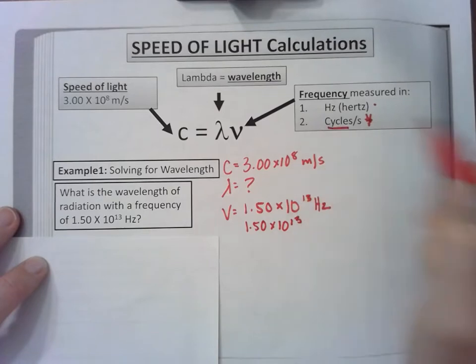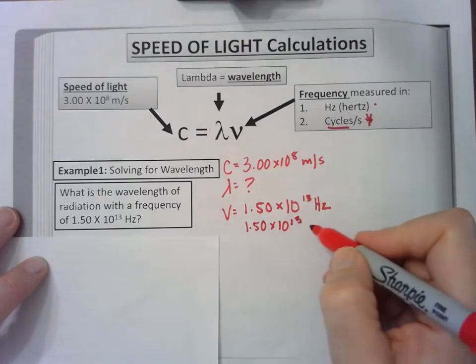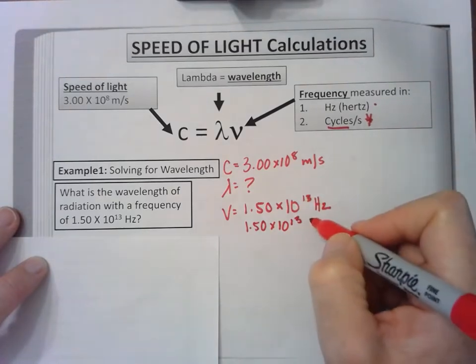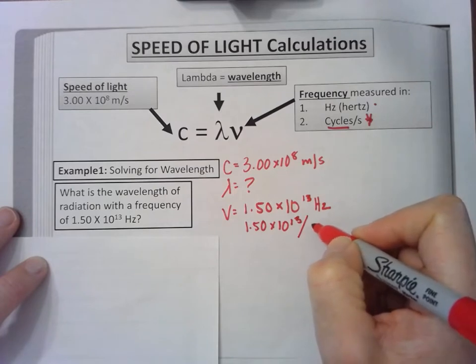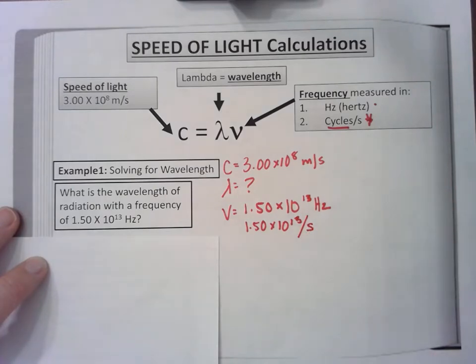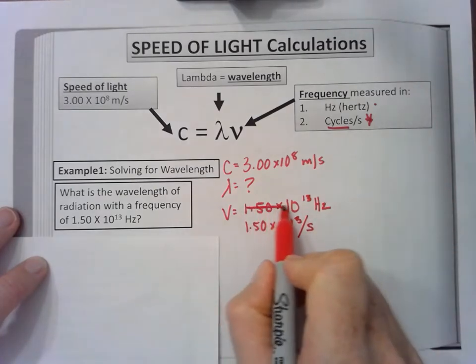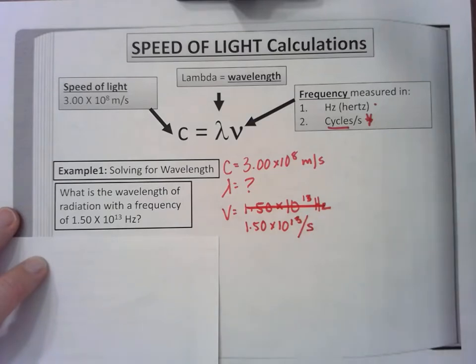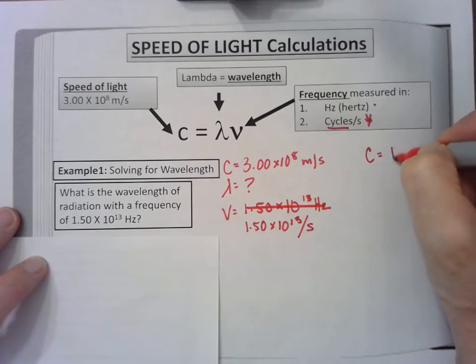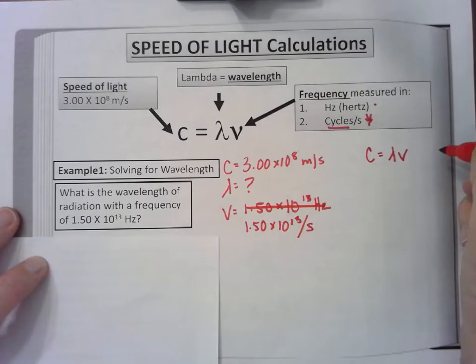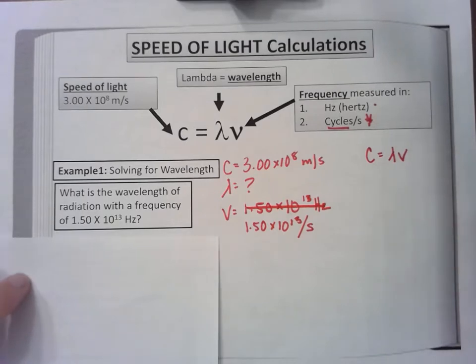I'm going to cross this out so I don't get confused. These two things are the same. I'm going to write my formula as provided, then rearrange it like I did for density using algebra. I'm looking for wavelength, which is multiplied by frequency.